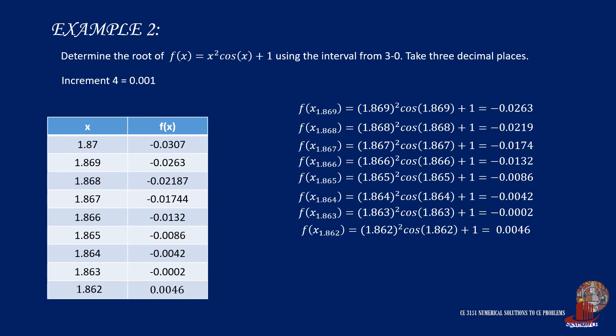Thus, we can conclude that the root of the equation between 3 and 0 is 1.863, keeping the required 3 decimals.